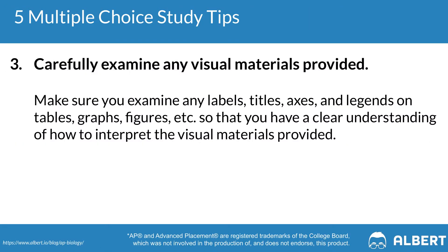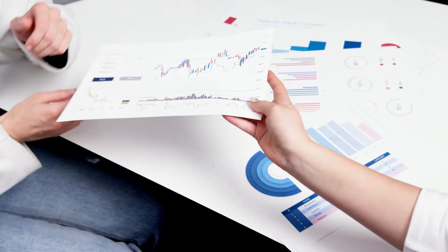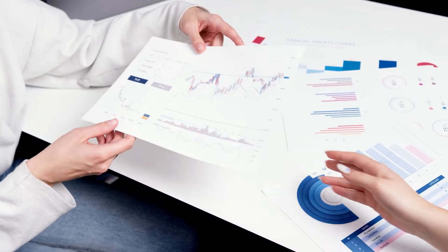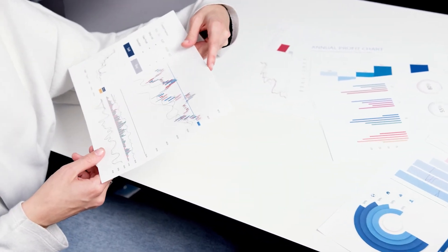Tip three is to carefully examine any visual materials that are provided to you. This means reviewing things like the labels, the axes, the titles, or anything given in the graphical representation. On the AP Biology exam, you're frequently asked to demonstrate your ability to interpret data in different formats. So it's really important to actually understand what is being presented and not just guess because you only understand the axes but not the actual data trends or representations being shown in the graph.